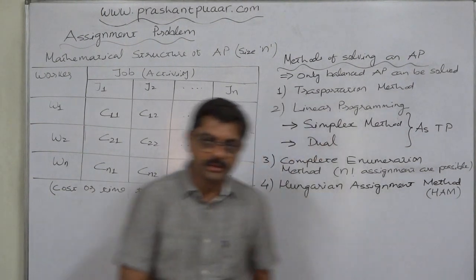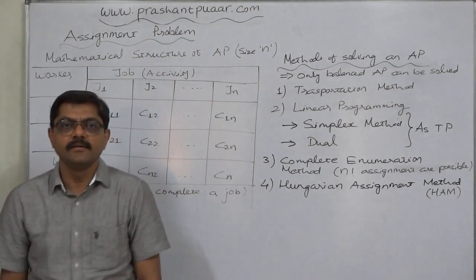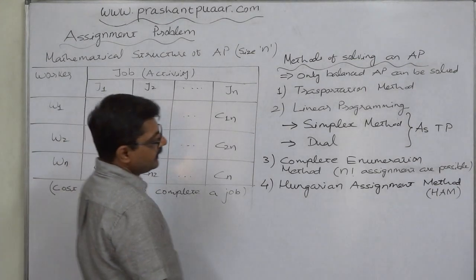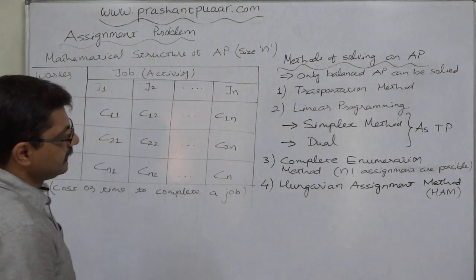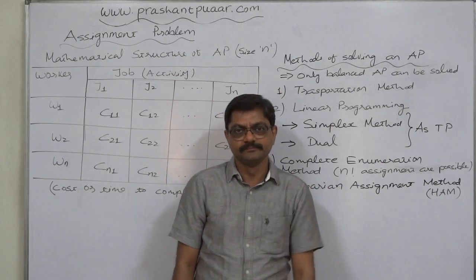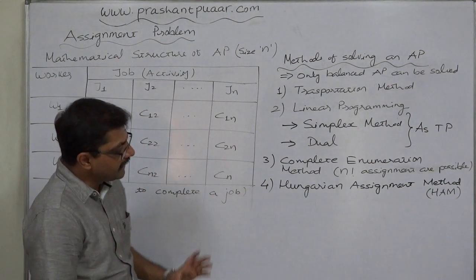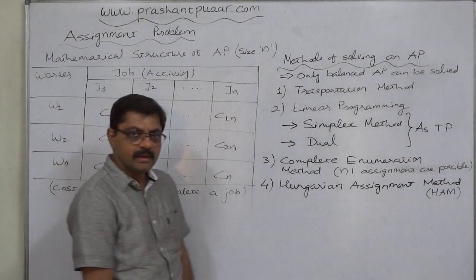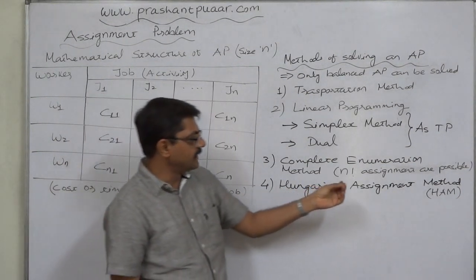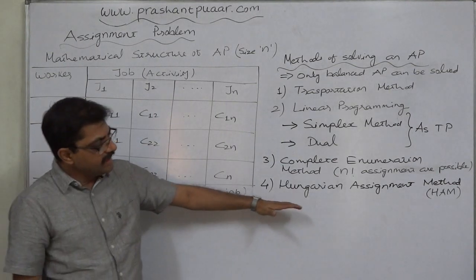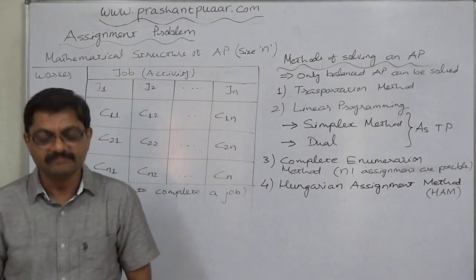The last and most important method is the Hungarian Assignment Method, also known as HAM. It is especially designed for solving assignment problems and uses the concept of opportunity loss or opportunity cost. While we will briefly look at a small example using complete enumeration, our main focus will be the Hungarian Assignment Method. That's all — thank you very much.